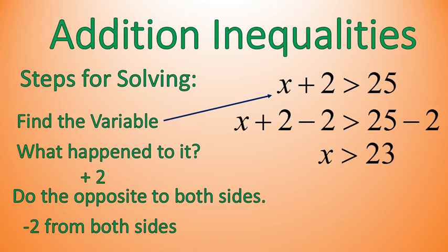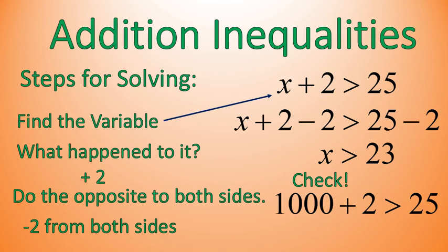Now the great thing about this is that we can check our work and know that it is correct all the time. All we have to do is substitute in some number that's greater than 23. So we could pick 24 or 25 or 26, or we could pick something ridiculously bigger than 23 like 1,000. And we're just going to substitute that back into our original inequality. X plus 2 is greater than 25. And we'll see, is 1,000 plus 2 greater than 25? 1,002 is certainly greater than 25. So our work is correct. If you picked a number that was less than 23, you would notice that your statement would be false. But any number larger than 23 will check out as correct for this inequality.